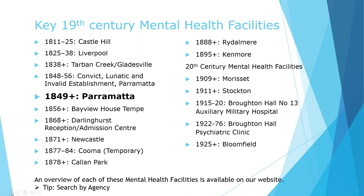Parramatta: the Convict, Lunatic and Invalid Establishment replaced the Female Factory when it closed at the end of 1847. From the outset, Parramatta Lunatic Asylum consisted of a free and a criminally insane division, with separate registers for persons admitted to each. On 31st December 1873, Parramatta Lunatic Asylum contained 704 free patients and 45 criminal patients confined under the Lunacy Act. Only female criminally insane patients were committed after 1958, when all remaining male patients were transferred to Morisset Hospital. By the 1970s, emphasis changed from inpatient care to community-based services, and in 1983 the name of the hospital was changed to Cumberland Hospital.